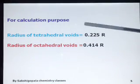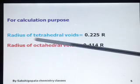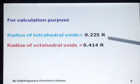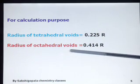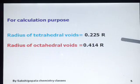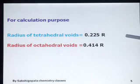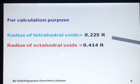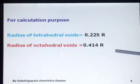The radius of the tetrahedral void is 0.225 of R, and the radius of the octahedral void is 0.414 of R. By this calculation we conclude that tetrahedral voids are smaller compared to octahedral voids. So cations smaller in size occupy the tetrahedral void, and cations bigger in size occupy the octahedral void.